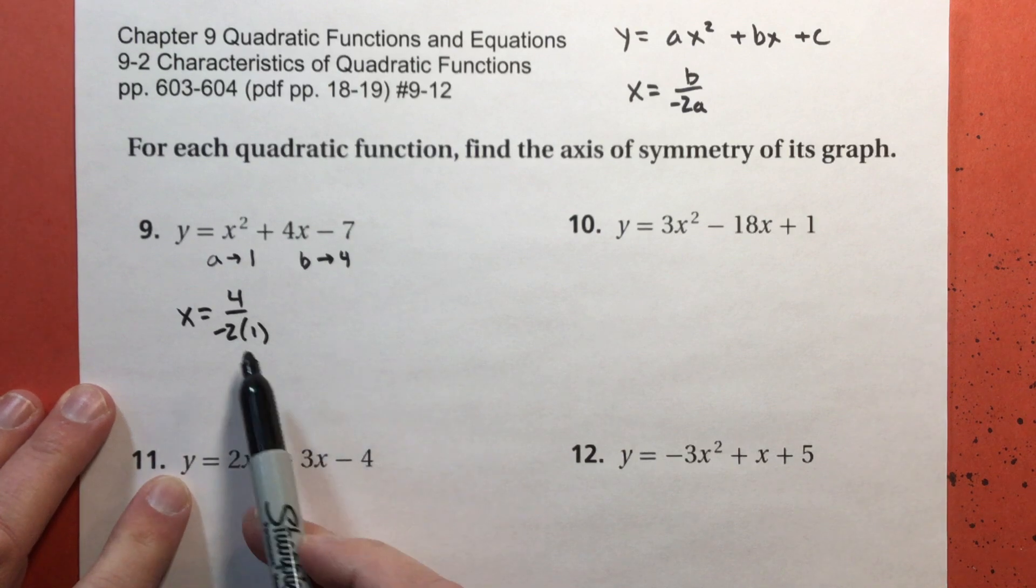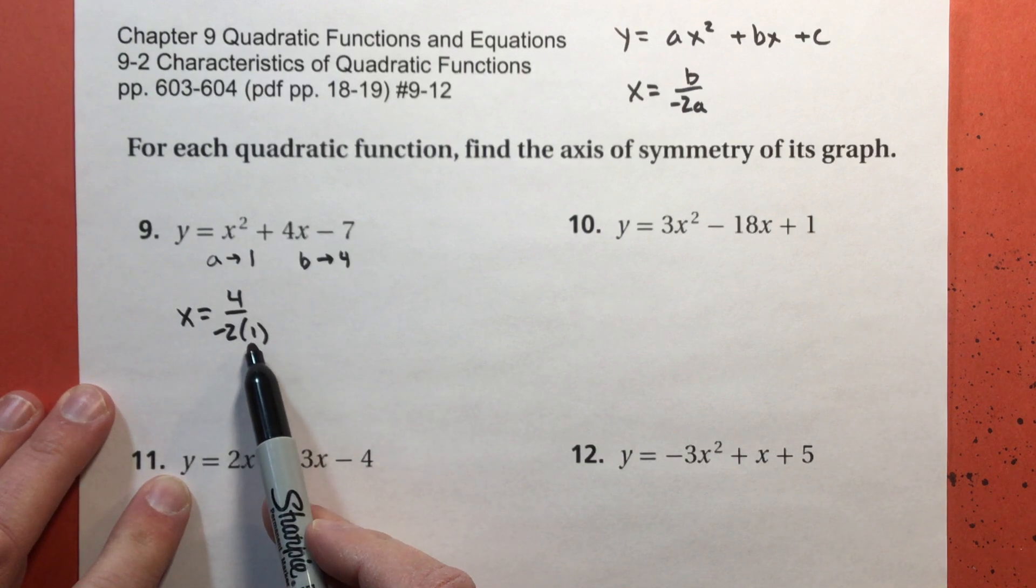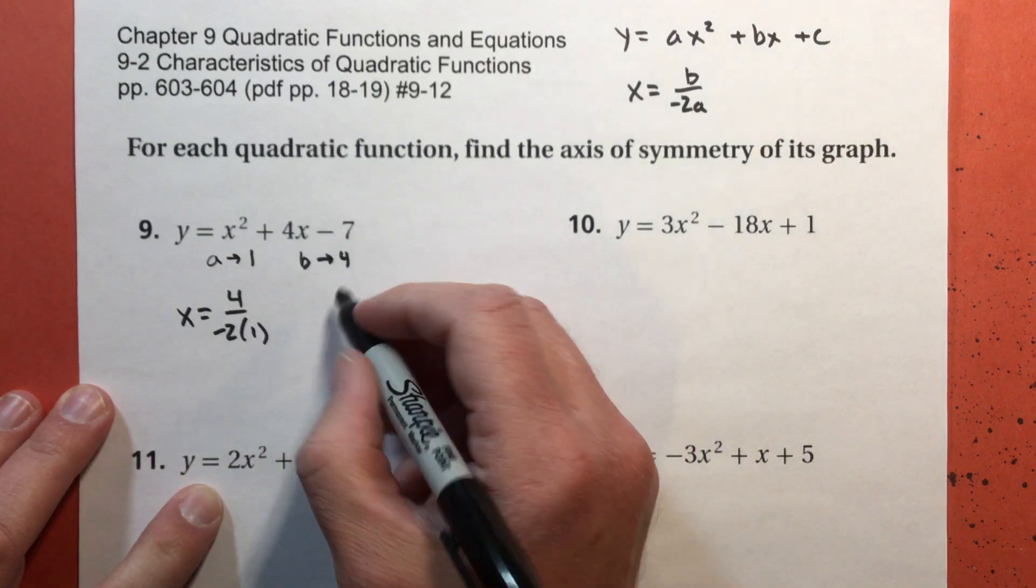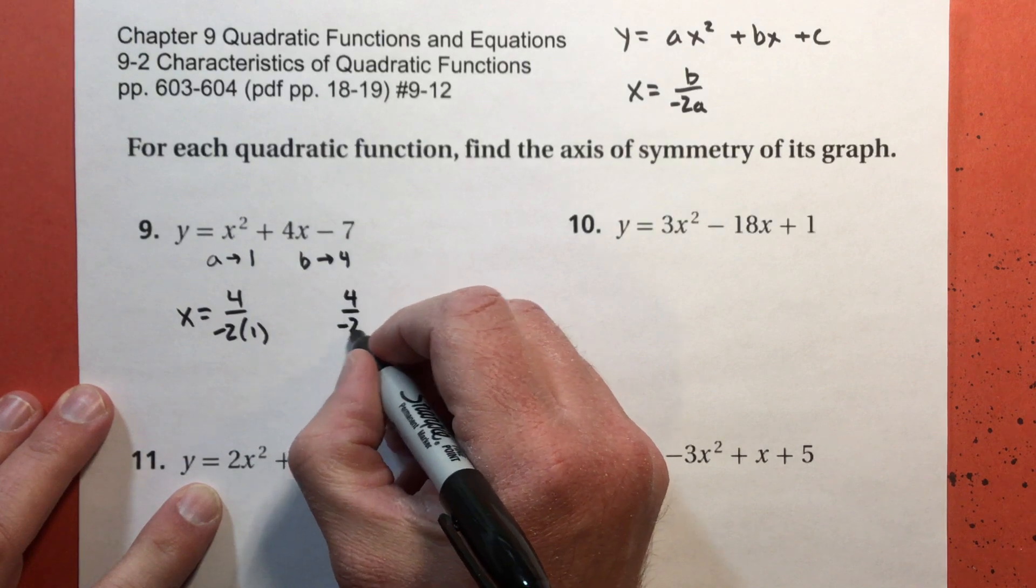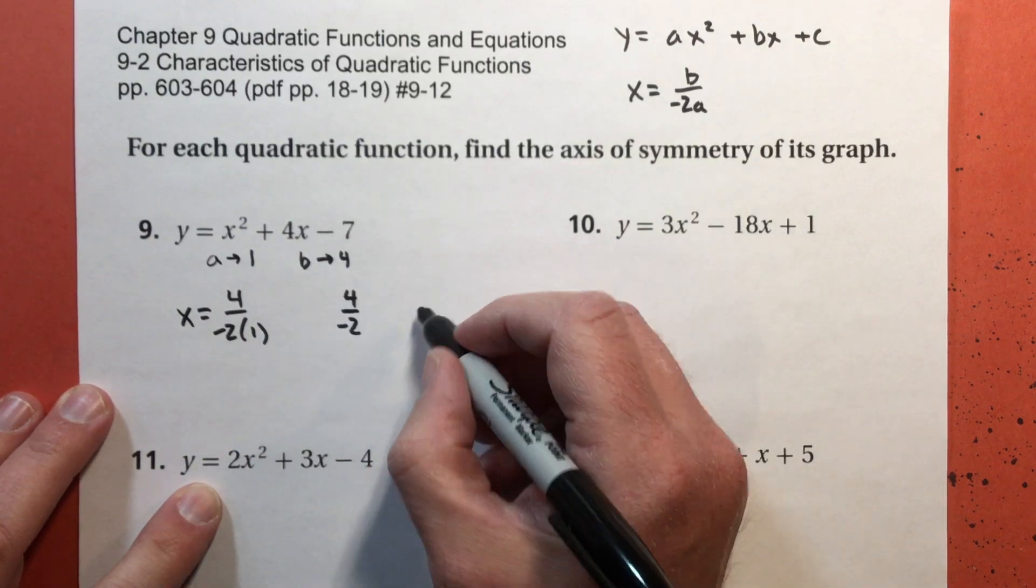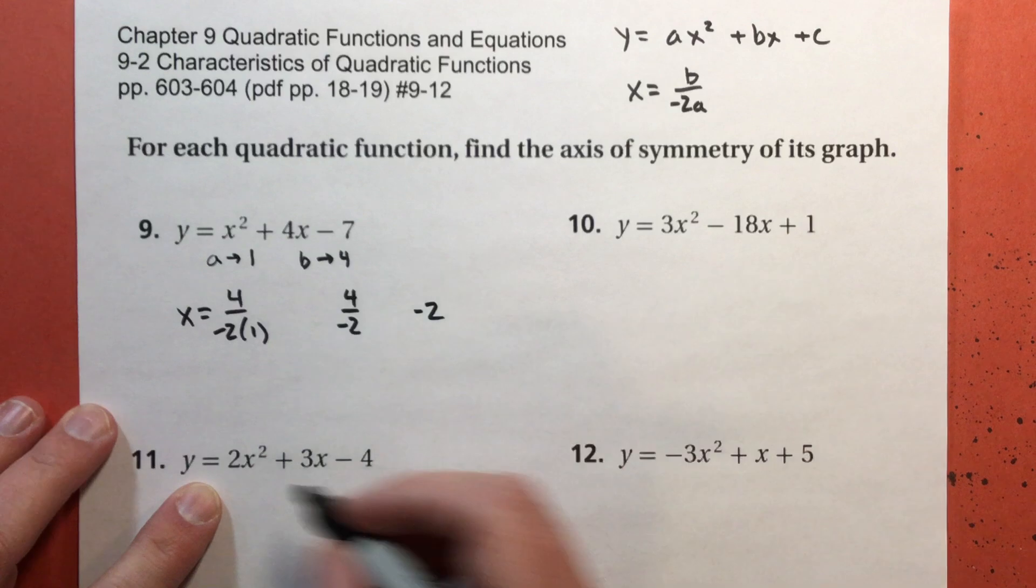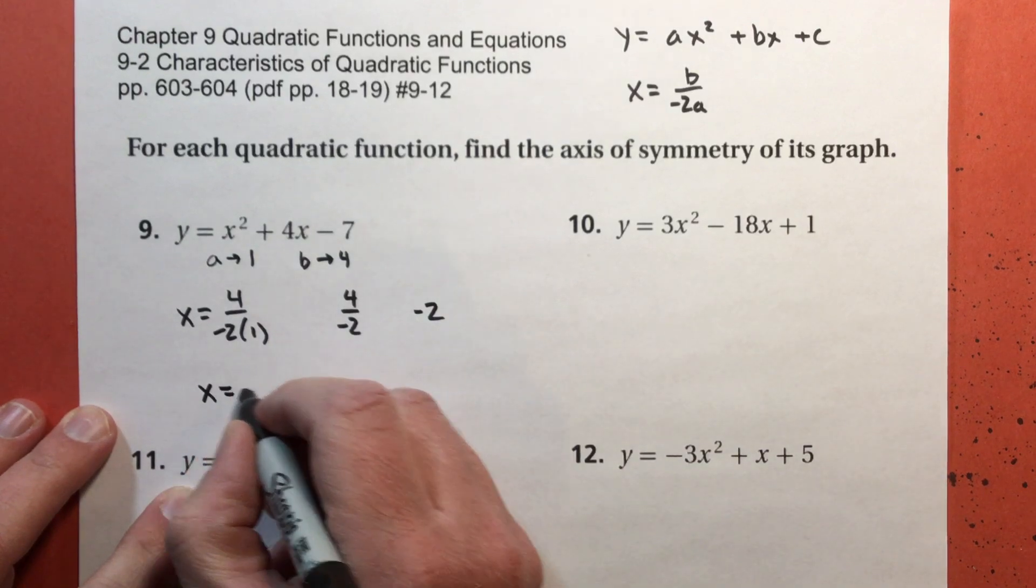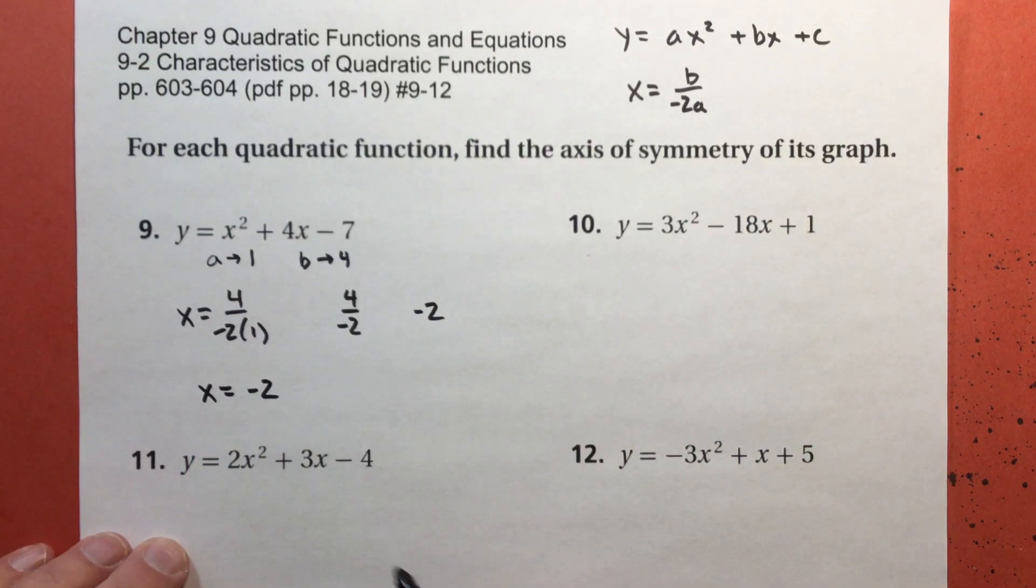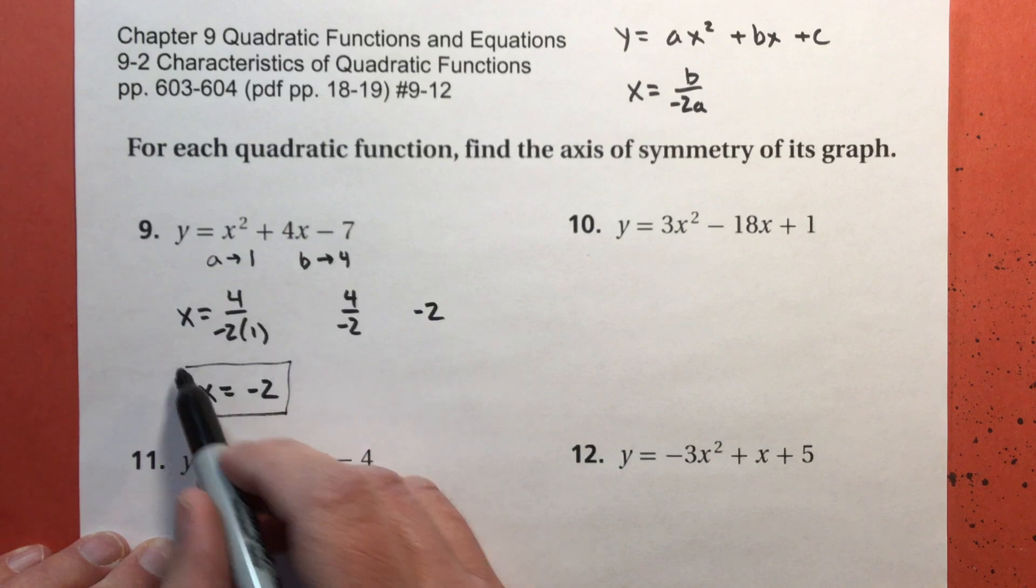So my axis of symmetry is going to be x equals b divided by negative 2 times a. You can certainly do this in your head. Negative 2 times 1 is negative 2. I'll go ahead and write it, and 4 divided by negative 2 is negative 2. So you have to tell me x equals negative 2. Put a box around that so you see it.